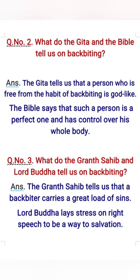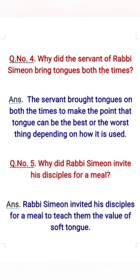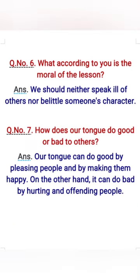Question 3: What do the Granth Sahib and Lord Buddha tell us? The Granth Sahib says a backbiter carries a great load of sins; Lord Buddha lays stress on right speech as a way to salvation. Question 4: Why did the servant of Rabbi Simeon bring tongues both times? To make the point that the tongue can be the best or worst thing depending on how it is used. Question 5: Why did Rabbi Simeon invite his disciples for a meal? To teach them the value of a soft tongue. Question 6: What is the moral? We should neither speak ill of others nor belittle one's character. Question 7: How does our tongue do good or bad? It does good by pleasing people; it does bad by hurting and offending them.